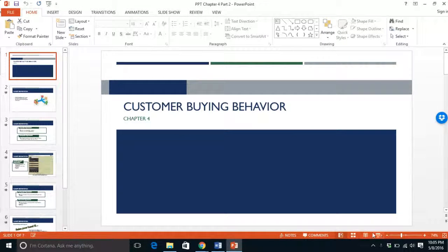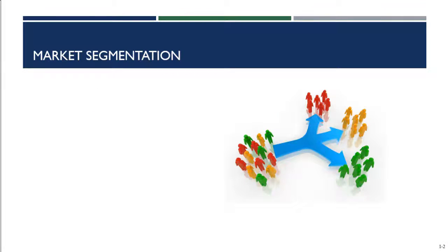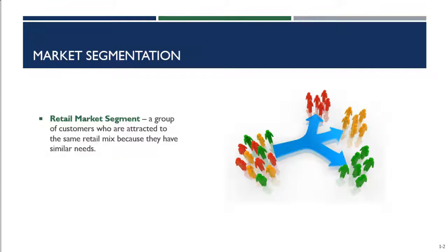The first part of chapter 4 walked us through the buying process. The second part of chapter 4 that we're going to focus on this semester is market segmentation and how retailers segment customers into groups. Retail market segments are groups of customers who are attracted to the same retail mix because they have similar needs. Individual retailers cannot meet the needs of every single customer, and so that's why it's so important that they're divided into segments.